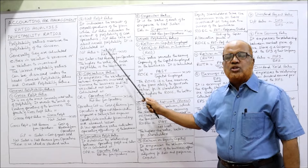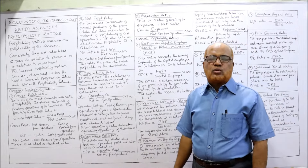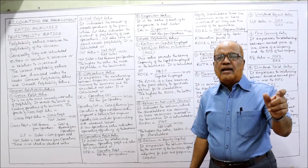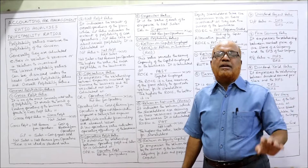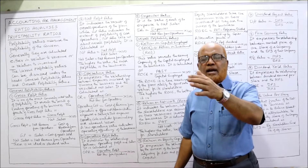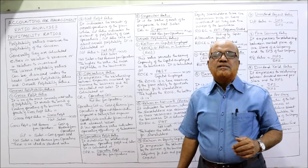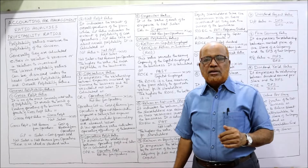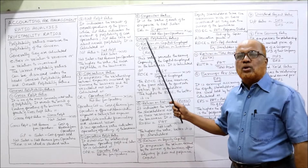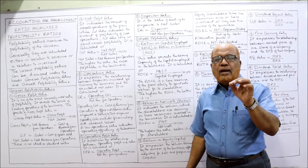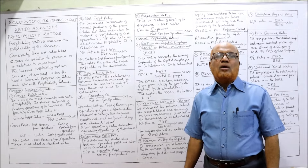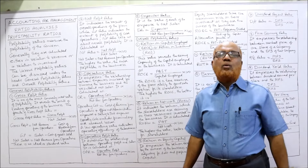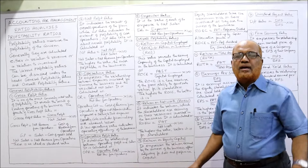The second category of profitability ratios is overall profitability ratios, where profits are related not with sales but with investment. Investment is made by owners, shareholders, or suppliers of funds such as debenture holders or bankers. The first and very important overall profitability ratio is return on capital employed (ROCE), also called return on investment (ROI). ROCE reveals the earning capacity of the capital employed in the business.